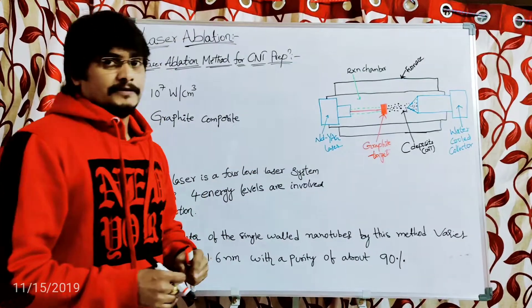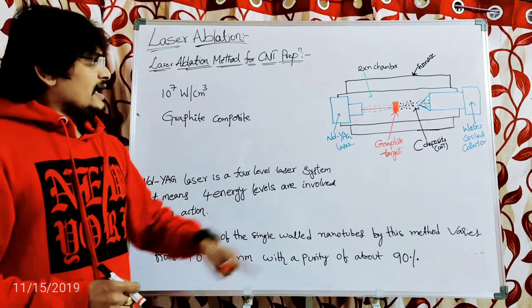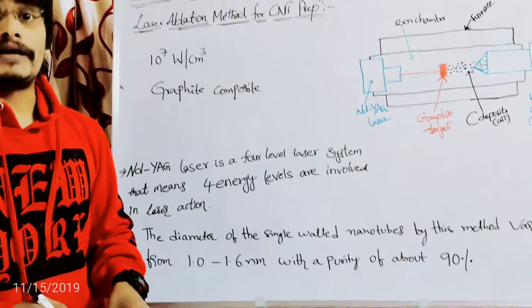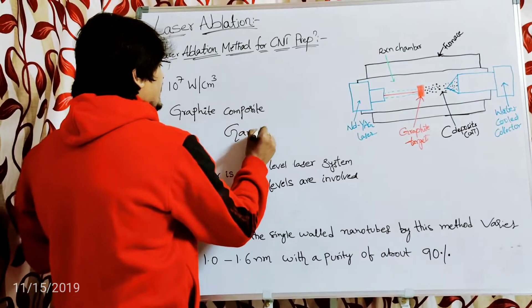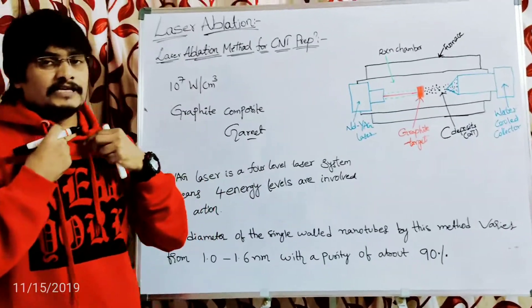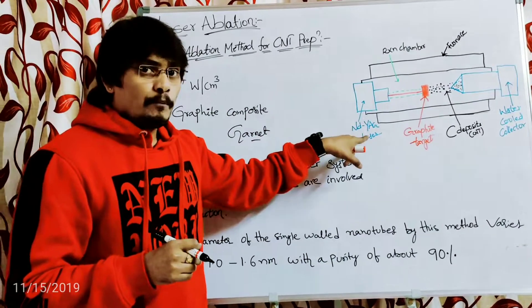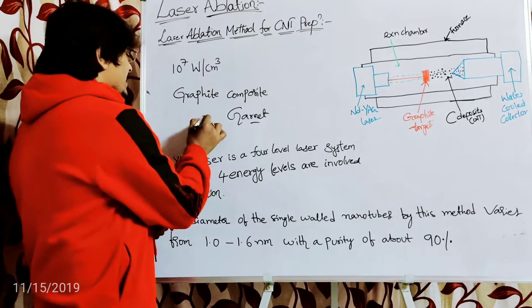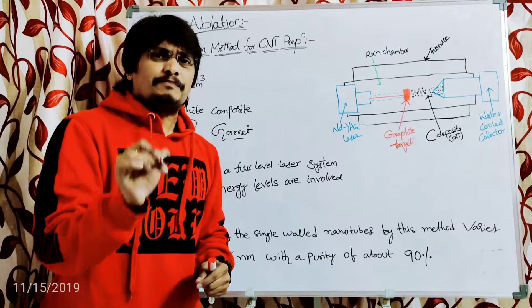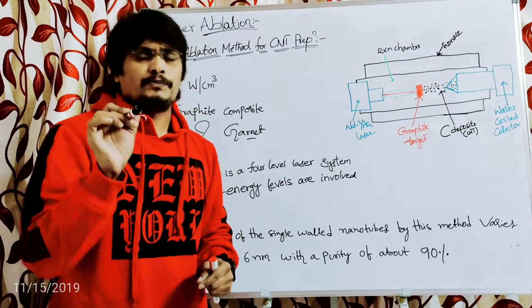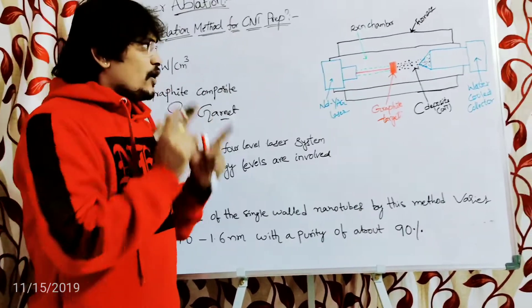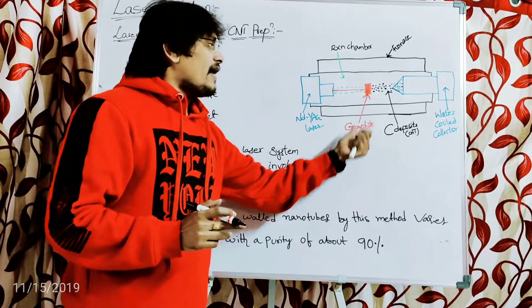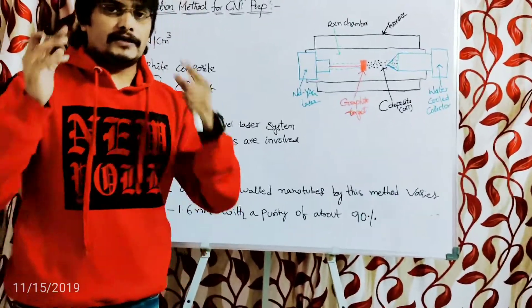The laser used for the preparation of carbon nanotubes by laser ablation is the Nd:YAG laser. Nd stands for neodymium, Y for yttrium, A for aluminium, and G for garnet. Garnet is a silicate mineral. So neodymium-doped yttrium aluminium garnet is used as the laser here.